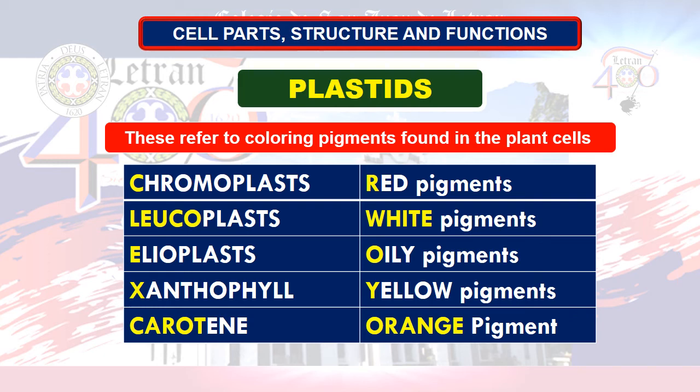Continuing with plastid types: aleoplast — oily pigments; xanthophyll — yellow pigments; and lastly, carotene — orange pigments. Another example is chlorophyll, which are the green pigments of a plant cell.